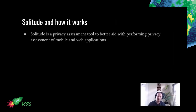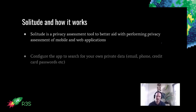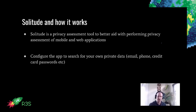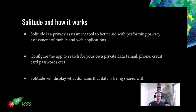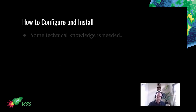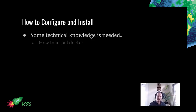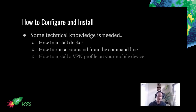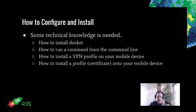Solitude is a privacy analysis assessment tool to help perform privacy assessments of mobile and web applications. The basic high-level overview: you take all the data about yourself — your email address, your phone number — and put it into a configuration file, which is then read by Solitude. You use the app the way you normally would, and then you'll have a user interface displaying what data you've configured Solitude to search for and where it's being sent. You do need some technical knowledge: how to install Docker, run a command from the command line, install a VPN profile, and install a certificate onto your mobile device so you can proxy all your traffic through Solitude.